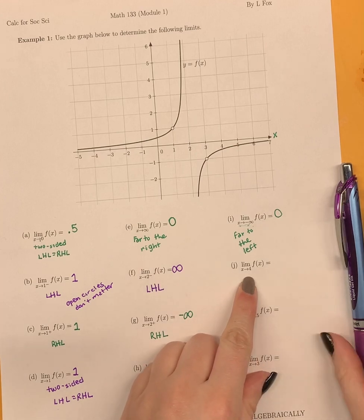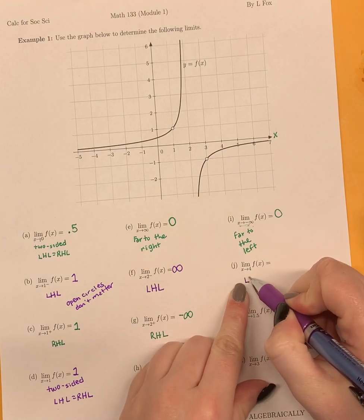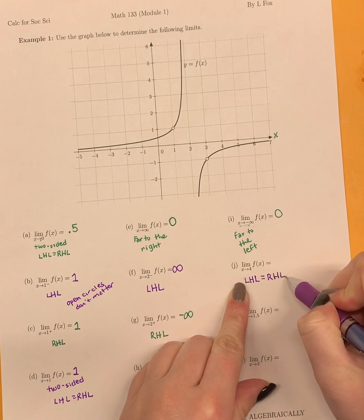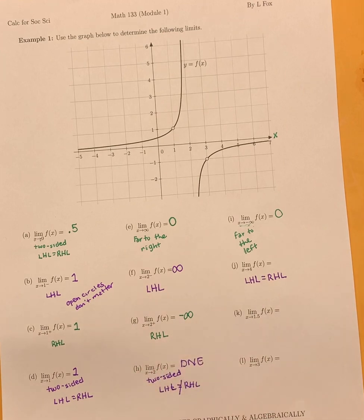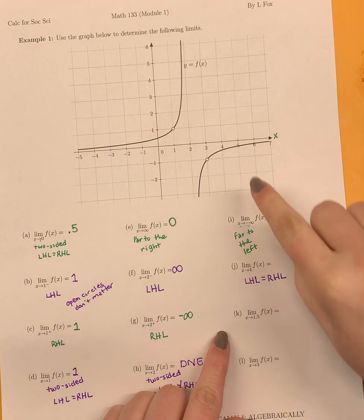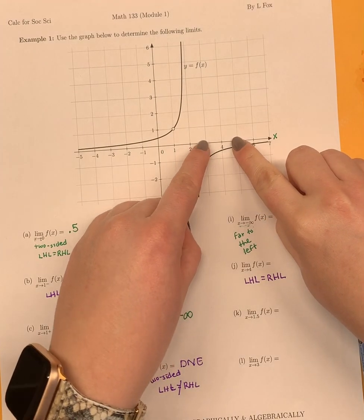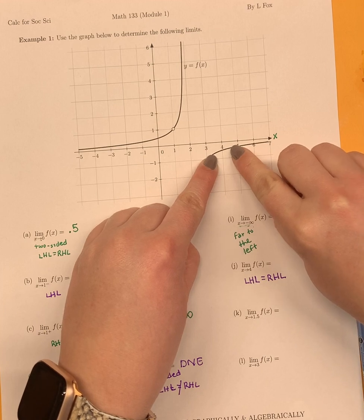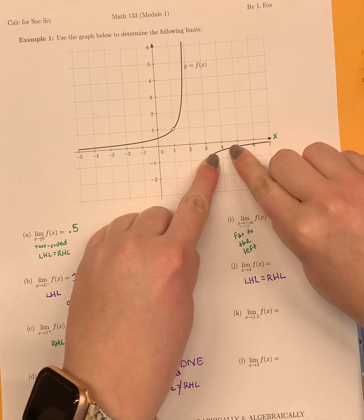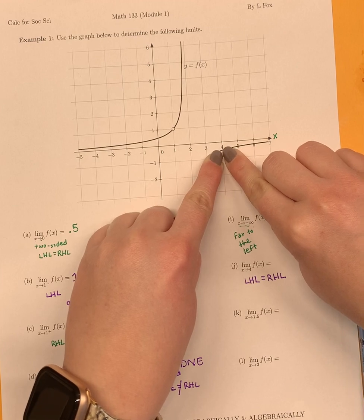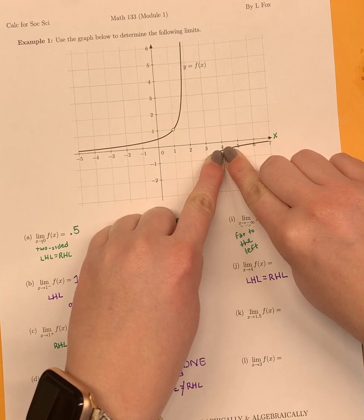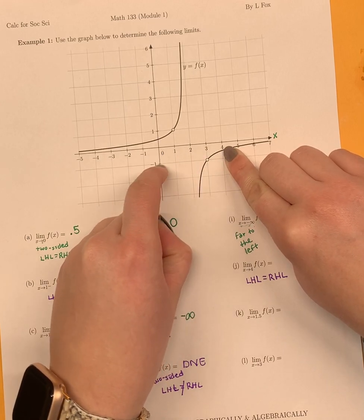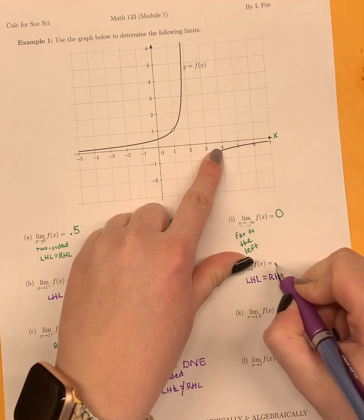Next, we have the limit as x goes to 4 — another two-sided limit. I'm going to check: does the right-hand limit equal the left-hand limit? From the left I might hop on at 3.5, and from the right at 4.5. On both sides I go toward x equals 4 and see what the y value is. My fingers do meet, so my answer is definitely not DNE. The y value looks like it's halfway between 0 and negative 1, so I would call that about negative 0.5.